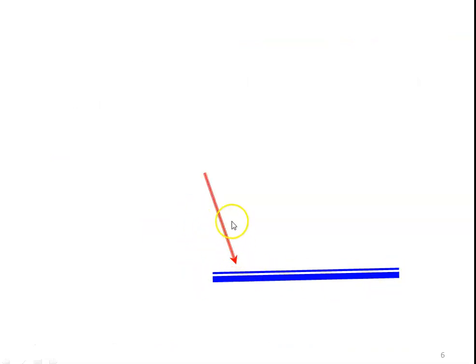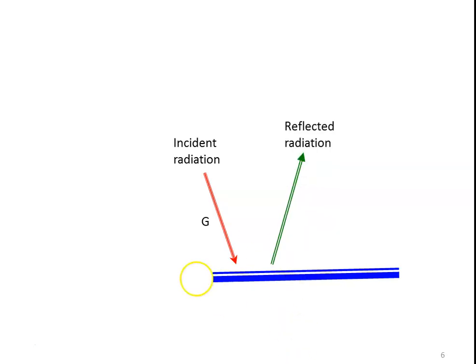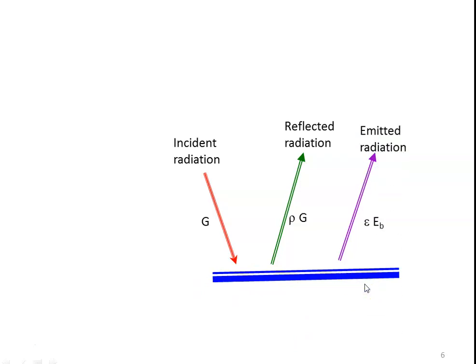We take a surface on which radiation energy is falling. The incident radiation, called G, is the total energy falling on the surface. The incident radiation is partially absorbed and partially reflected. The amount reflected equals ρ·G. By virtue of the surface temperature, energy is also emitted, equal to ε·Eb, where ε is emissivity and Eb is black body radiation. The combined reflected and emitted radiation is called radiosity J.